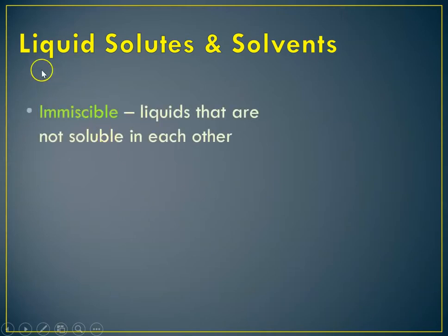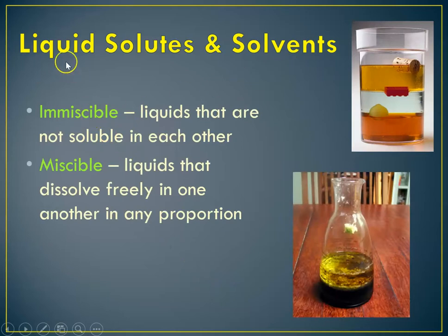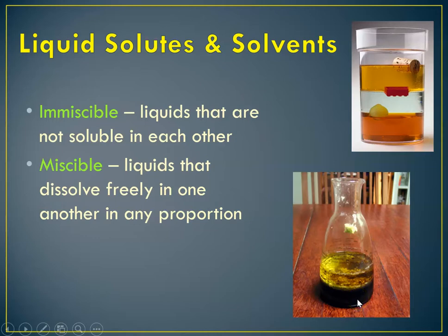When talking about liquid solutes in liquid solvents, we discuss whether a liquid is soluble in another liquid. If they're not soluble in each other, it's said to be immiscible. Here are two examples — one showing three liquids of different densities layered according to density, not soluble in one another. This would be like salad dressing: oil is not soluble in water, so you get separation, and they layer according to density.